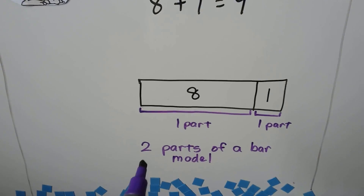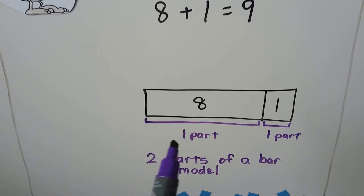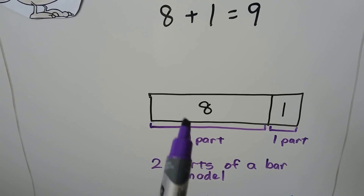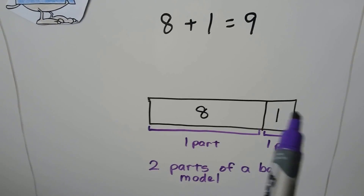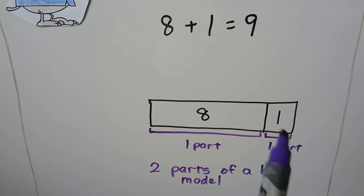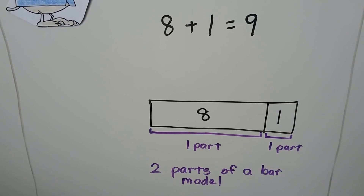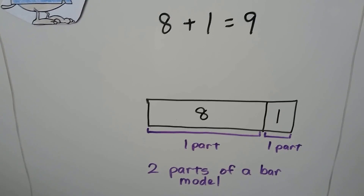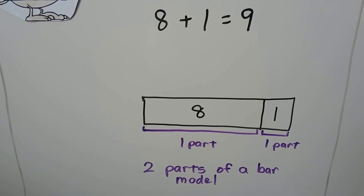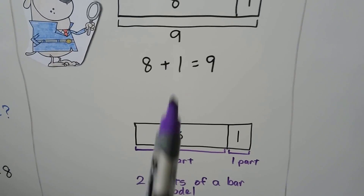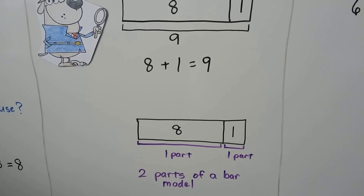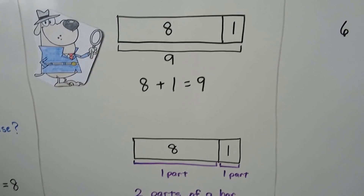There are two parts to this bar model — one part and another part. We put them together to find out how many are in all.